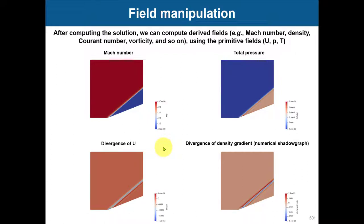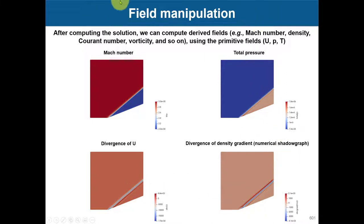Let's go to the supersonic case and do some field manipulation. By default this case only computes pressure and temperature, but what about Mach number, total pressure, divergence of velocity, or the numerical shadowgraph — which is the divergence of the density gradient? We need field manipulation. There are function objects for some of these, but sometimes they don't exist and you need to use the postProcess utility or even ParaView.